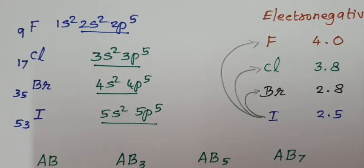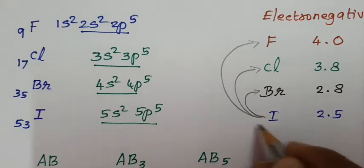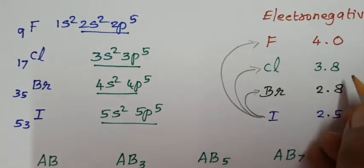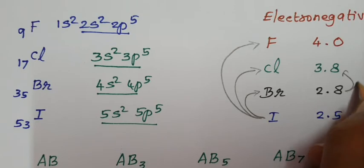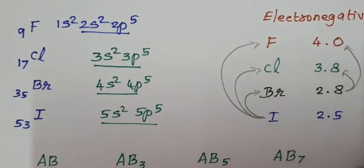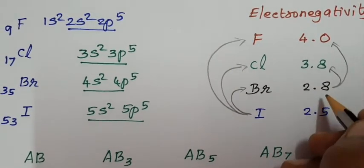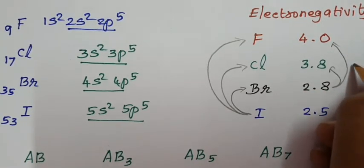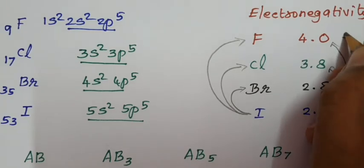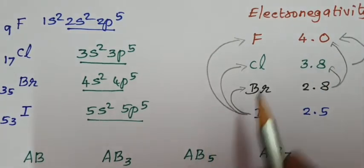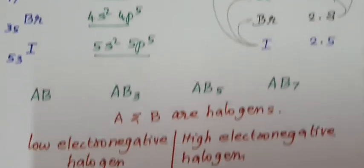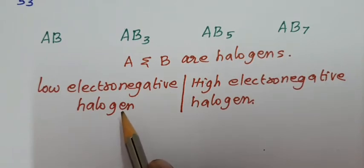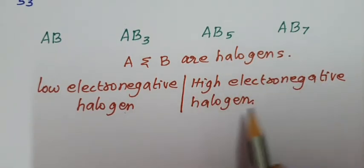Bromine combines with chlorine and fluorine. If the first halogen is bromine, the second halogen is chlorine or fluorine. Chlorine combines only with fluorine. Low electronegative halogen should be written first followed by the high electronegative halogen.